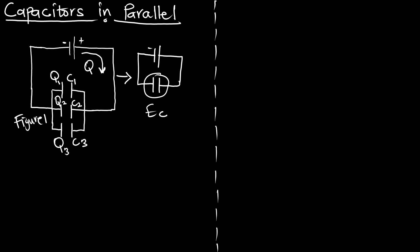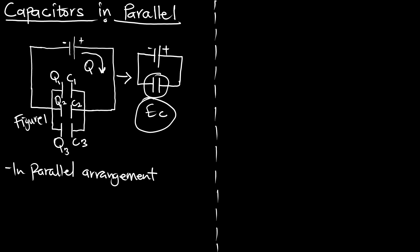So this is the voltage source — negative and positive. How do we find this equivalent capacitance from the three? What we know is that in parallel arrangements, or in parallel connection, there is the same voltage. When you check out the episode on how to find the total resistance of resistors in parallel arrangement, you will know that the voltage across each parallel-arranged resistor is the same. The same thing happens with capacitors — if capacitors are in parallel, there is equal voltage across each of them.